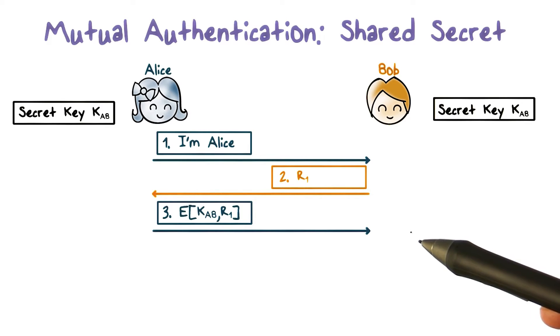If it matches, then he knows that the party he's communicating with must be Alice. Because other than himself, only Alice knows the shared key KAB. And without KAB, R1 cannot be encrypted properly. That is, the ciphertext that he receives won't be decrypted properly to R1.